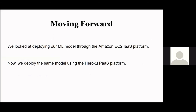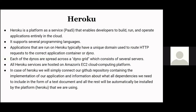We've looked at deploying our ML model to Amazon EC2 as an IaaS platform. Now we'll deploy the same model using the Heroku PaaS platform. Heroku is a cloud platform that lets one build, deliver, monitor, and scale apps on the web. With Heroku, we only need to be concerned with our application and data — obscure details like maintaining service runtime, OS management, and managing access rights are abstracted from us. Applications on Heroku run in containers called dynos, which typically have a unique domain used to route HTTP requests, and the dynos are spread across a dyno grid consisting of several servers.